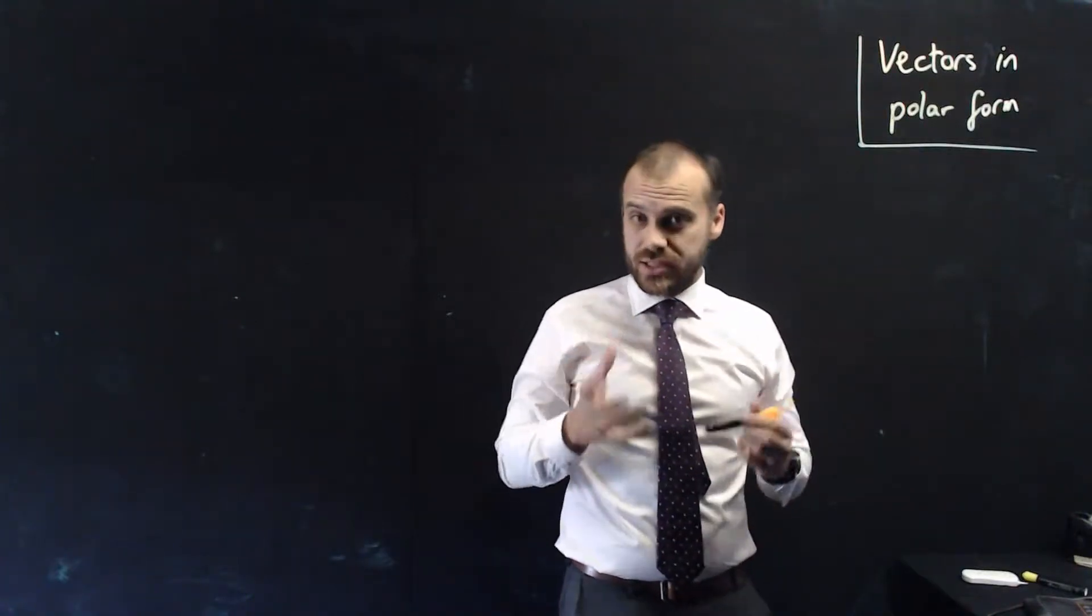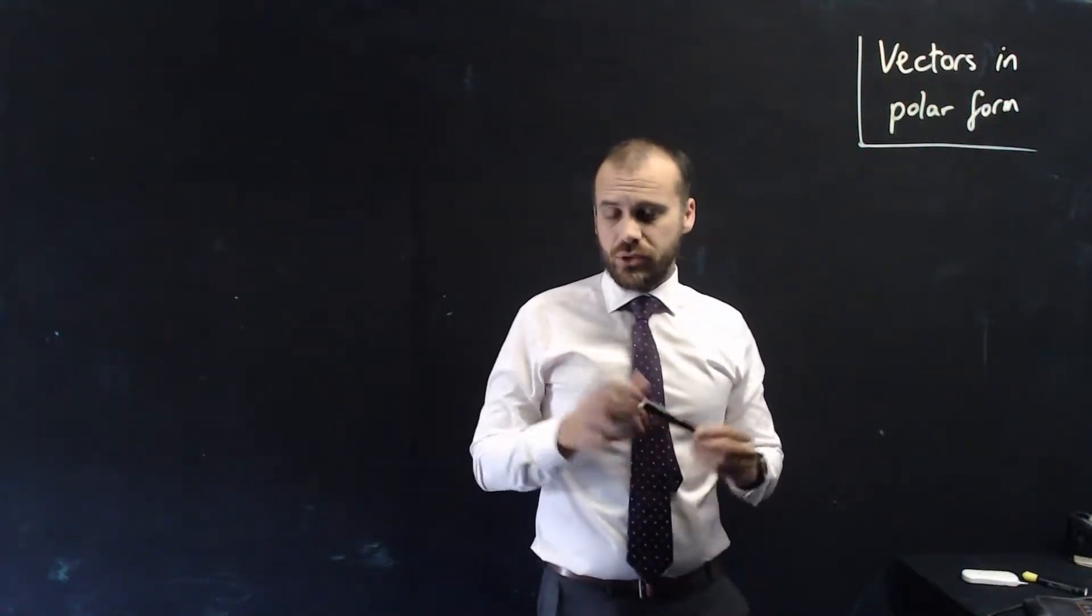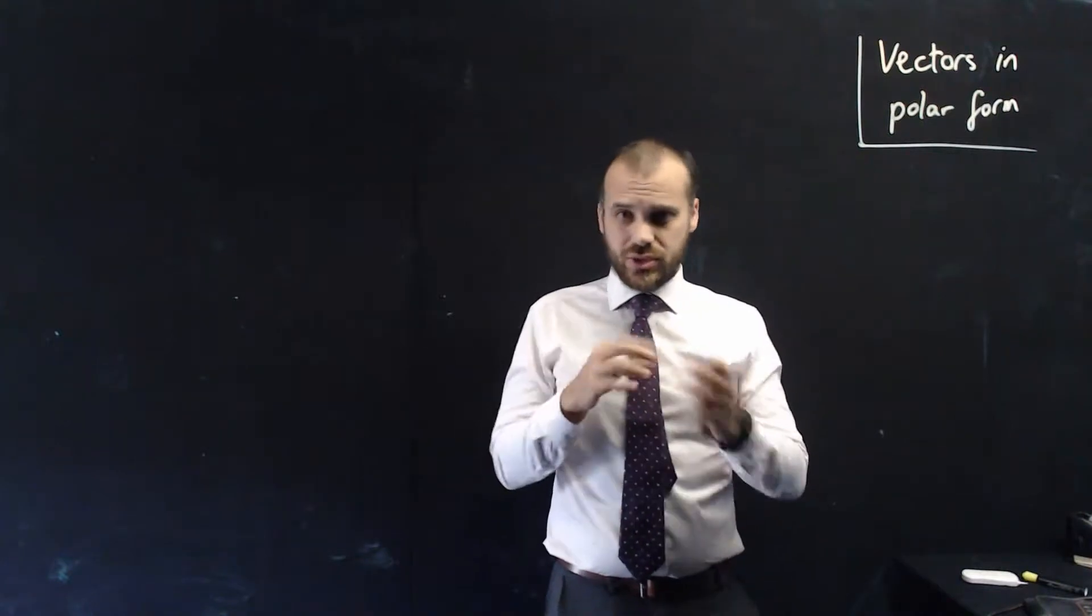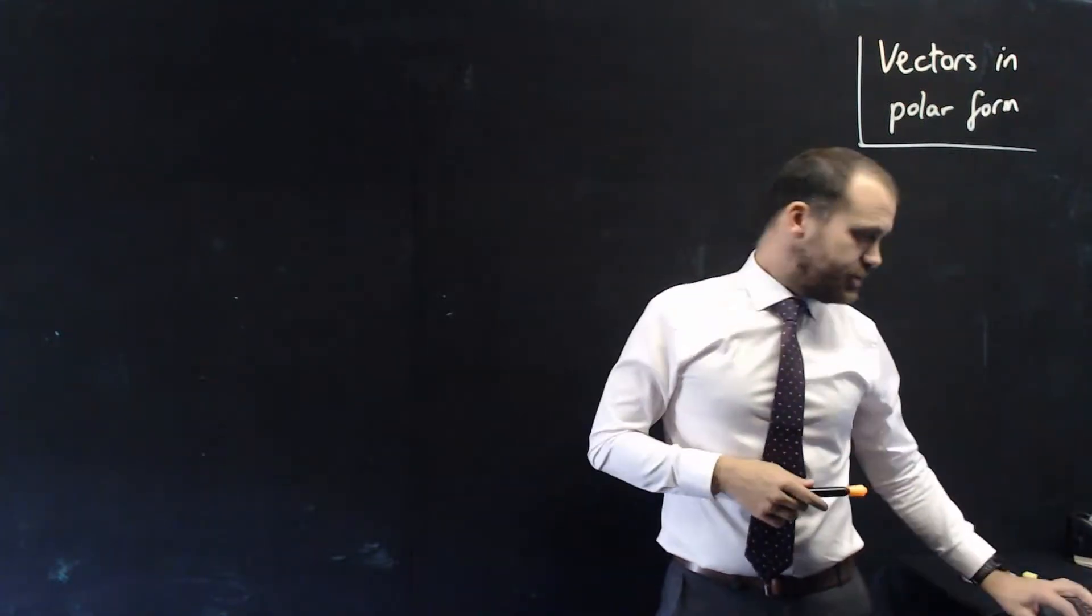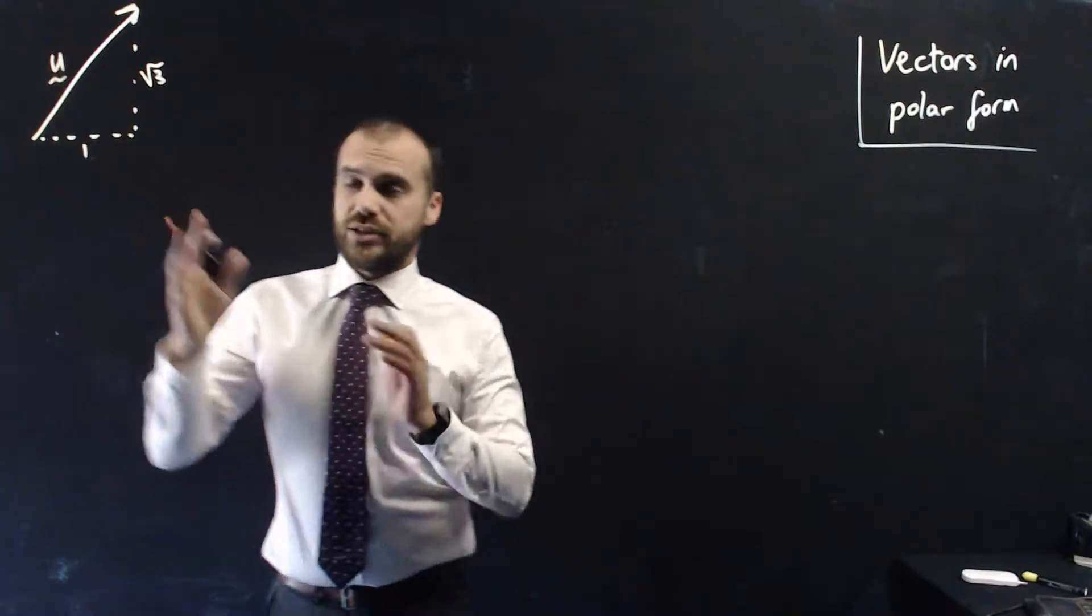Alright, so in this video we're going to talk about vectors in polar form. Now you already know how to represent a vector using multiple different ways. So, for instance, if this is our vector, let's call it vector u,